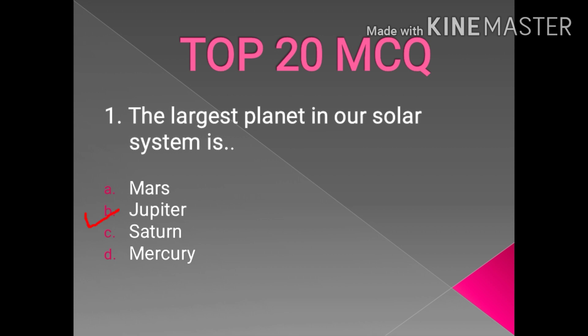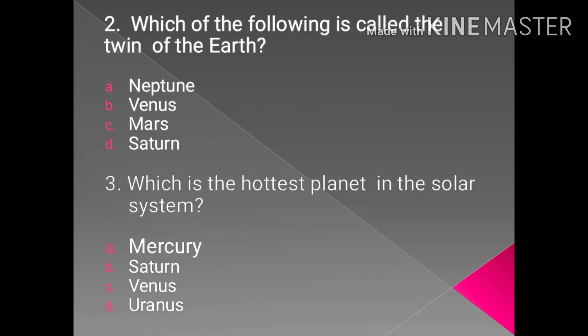The largest planet is Jupiter. Why is it so? Because Jupiter is more than twice as massive as all the other planets combined. Jupiter's immense volume could hold more than 1300 Earths in it.